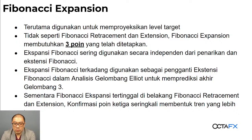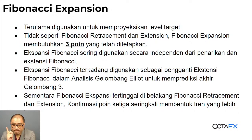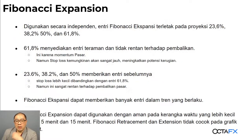Karena penarikannya 3 poin maka otomatis ini jadi lebih pelan daripada retracement atau extension. Tetapi karena dia menggunakan 3 poin maka dia juga lebih akurat. Biasanya orang juga menggunakan Fibonacci expansion ini dalam Elliott Wave buat ngitung wave ketiganya — dia pakai dari wave 1 selesai sampai wave 2 selesai, itu ABC, kemudian dapat memproyeksikan berakhirnya wave ketiga itu dimana.